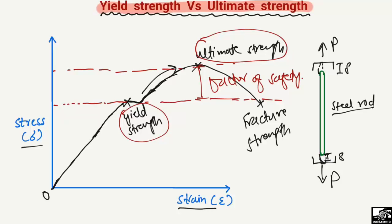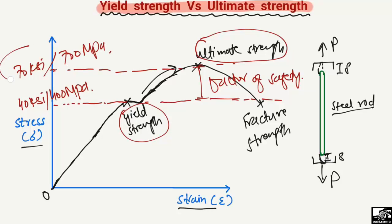For example, if a steel has a yield strength of 40 ksi (or 400 MPa) and an ultimate strength of 70 ksi (or 700 MPa), we take the yield strength value of 40 ksi or 400 MPa in our design — not the ultimate strength. This gives us a material factor of safety during the construction phase or the loading phase of the structure.